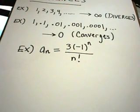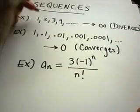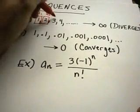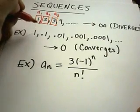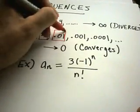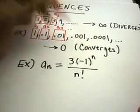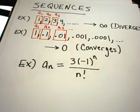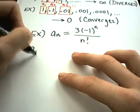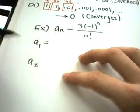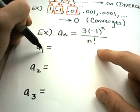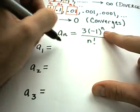The first term in your sequence is denoted a sub one, the second is a sub two, and so on. In the second sequence example, a sub one is one, a sub two is point one, a sub three is point zero one, etc. To write out the first three terms of the formula-defined sequence, you calculate a sub one, a sub two, and a sub three by replacing n with the term number.